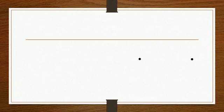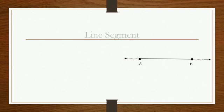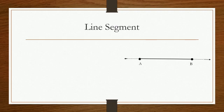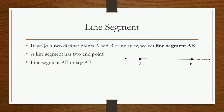Line segment. Take two points A and B on a sheet of paper and join them using a ruler. We get a straight line A and B. A part of line is called a line segment. A line segment has a starting point and an end point. It has a definite length. It is written as line segment AB or SEG AB in short.